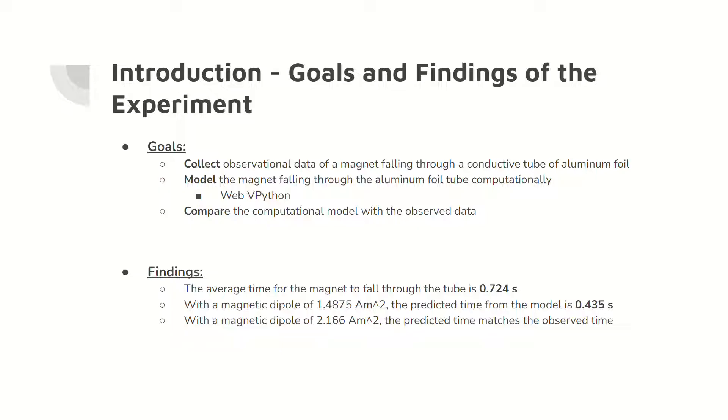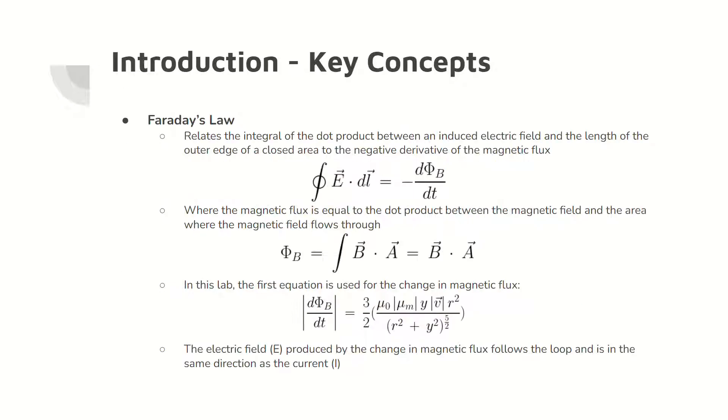The experiment findings are shown below, with the key finding being that the magnet falls through the tube in 0.724 seconds. Faraday's law is one key concept of this lab. This law relates the integral of the dot product between the electric field and the outer length of a closed area with the negative change in magnetic flux. The magnetic flux is equivalent to the dot product between the magnetic field and a defined surface area.